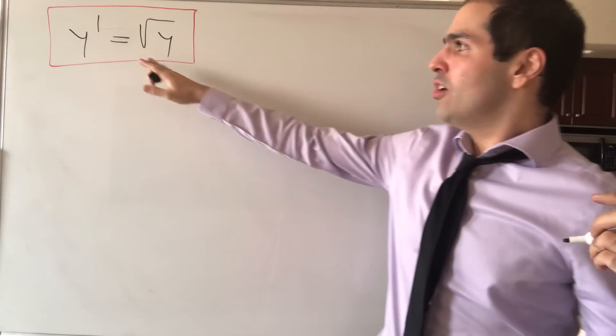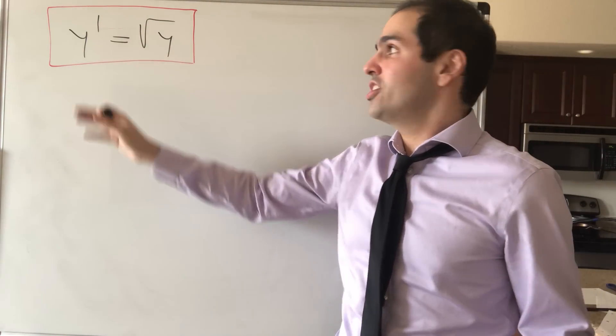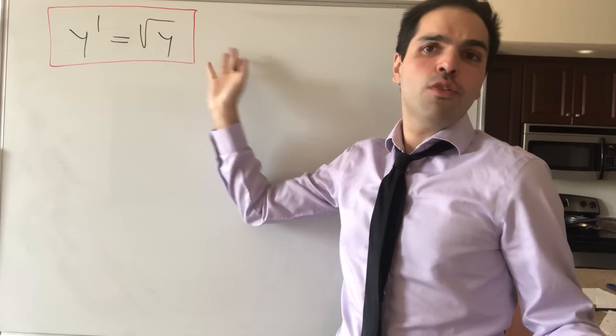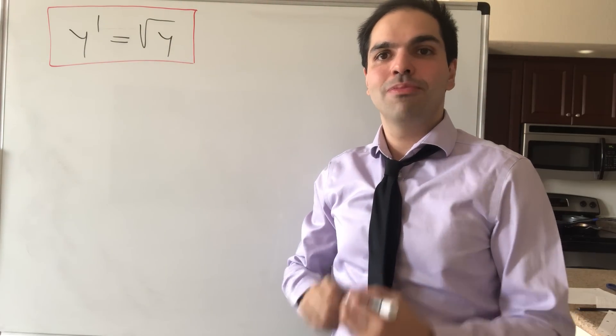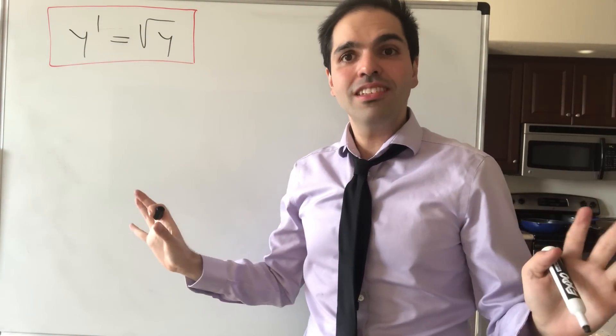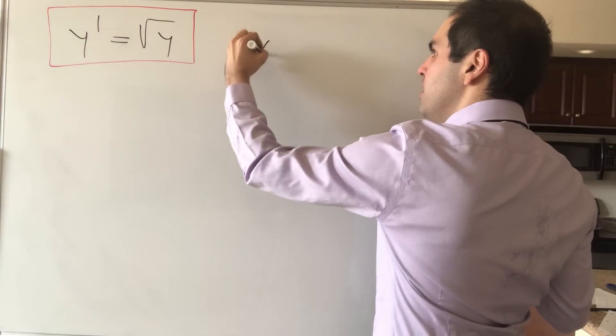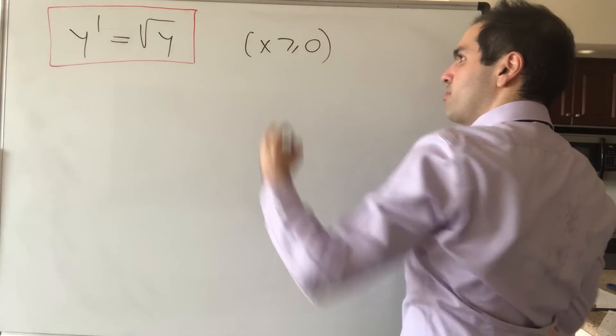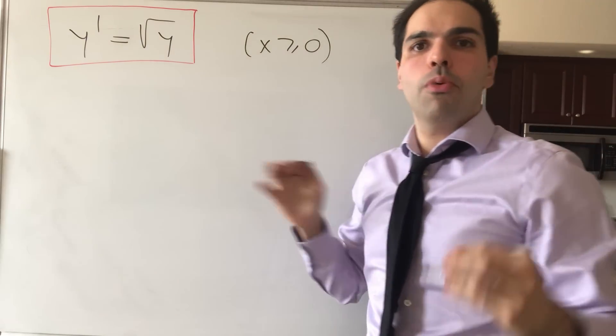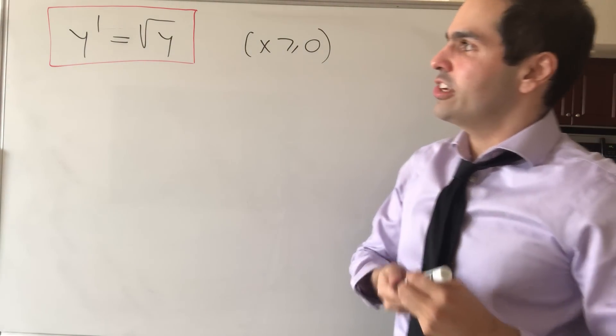So in particular, let's find some functions whose derivative equals to the square root of this function. And just for simplicity, we will assume that our input is greater or equal to zero. Not very important, but it does make our work easier.